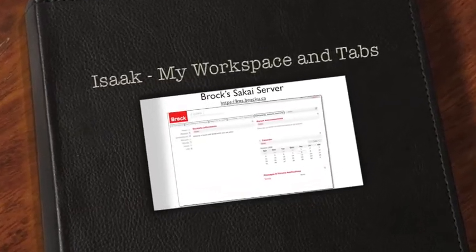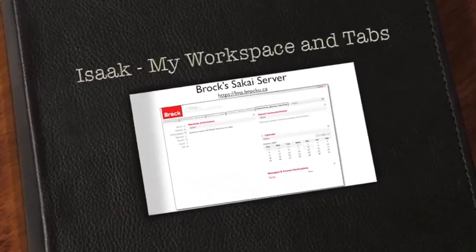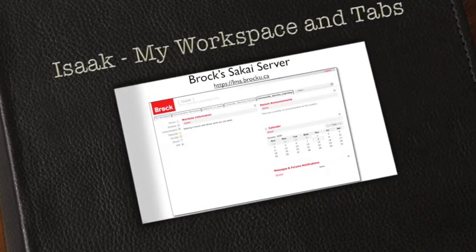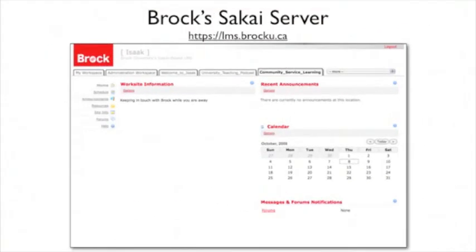When you first log in to your Sakai site, you'll be in your My Workspace. To the right of that will be your courses, either those that you're involved in as a student or those that you're instructing as an instructor. The first four courses you're involved in will appear as tabs across the top, and any additional courses will be in the More Dropbox listed down in there.